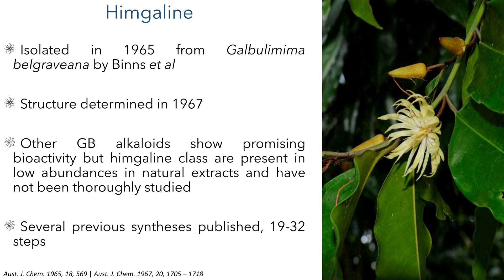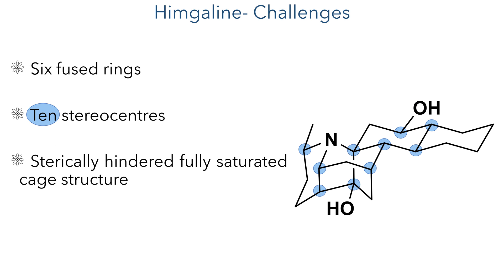This has made them an attractive target for total synthesis and several routes have already been published, taking between 19 and 32 steps to synthesise this natural product. This is quite a difficult target as it has a complex structure consisting of 6 fused rings with 10 stereocenters. These are all part of a sterically hindered fully saturated cage structure which places significant constraints on the type of transformations and reagents that can be used.